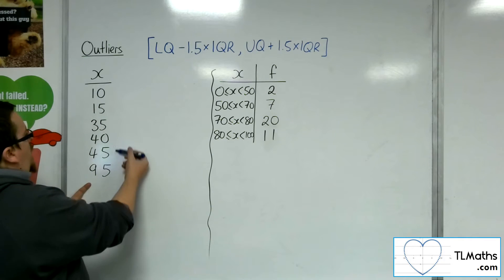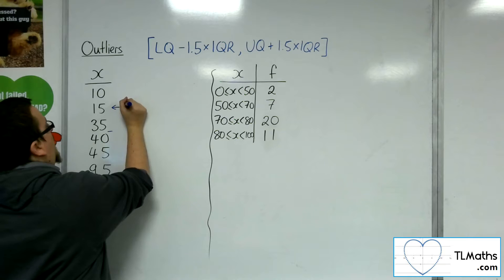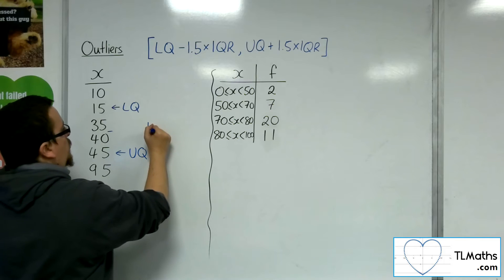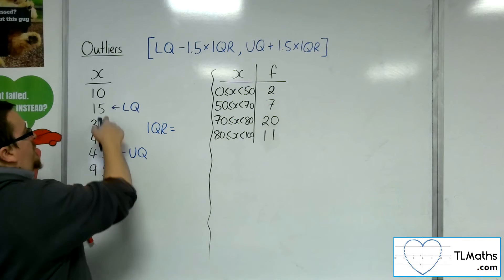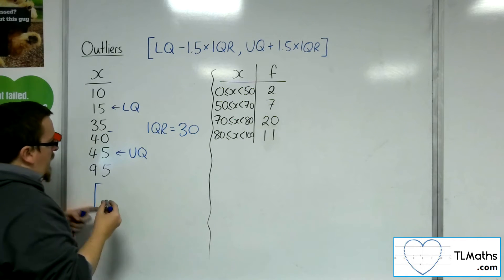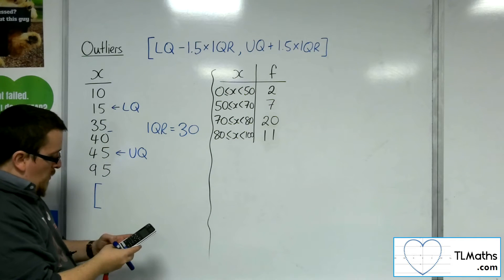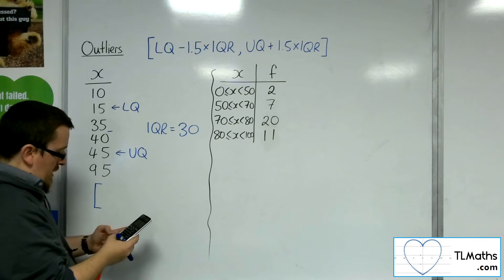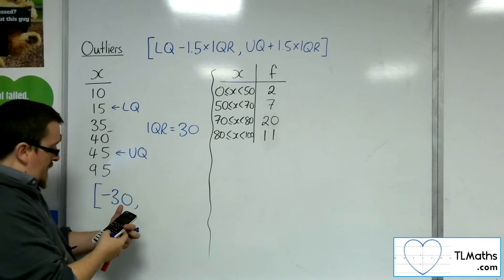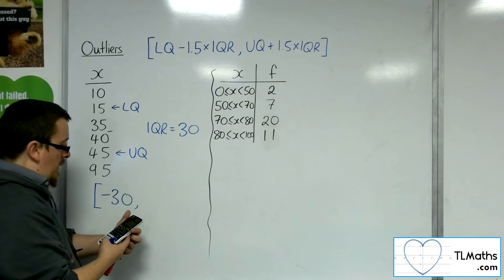I've got six bits of data, so the median sits in the middle. That means 15 is the lower quartile and 45 is the upper quartile. So the interquartile range is 45 take away 15, which is 30. Doing the lower quartile — 15 take away 1.5 times the IQR — gives minus 30.